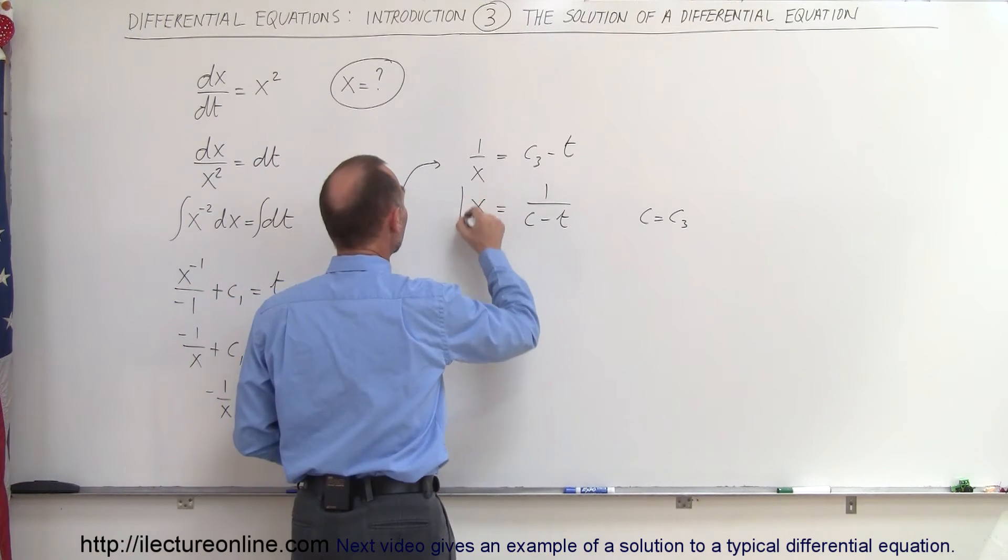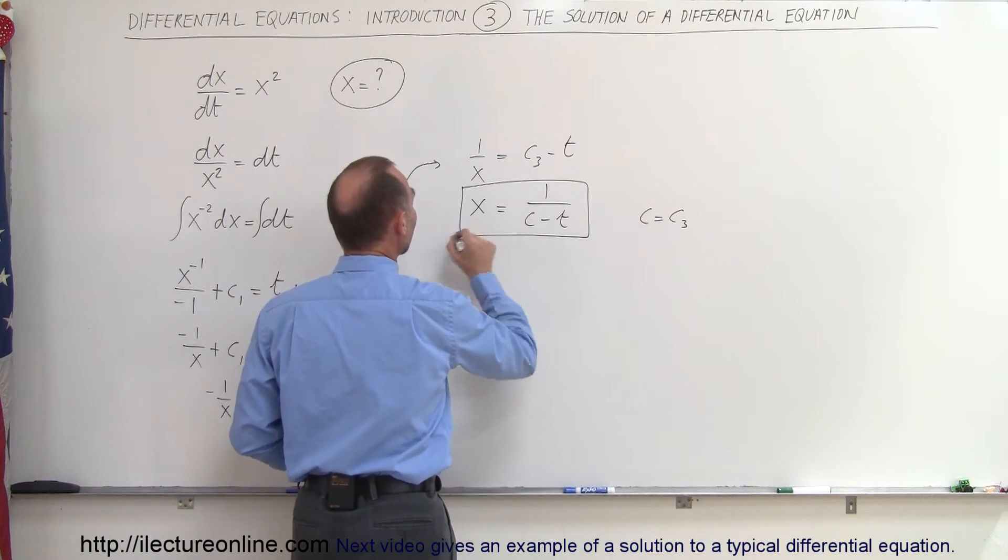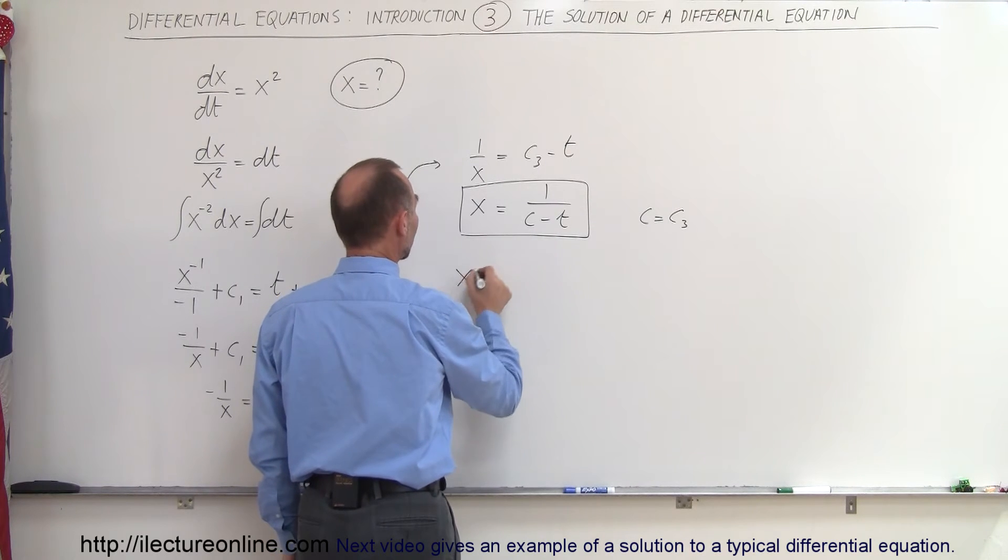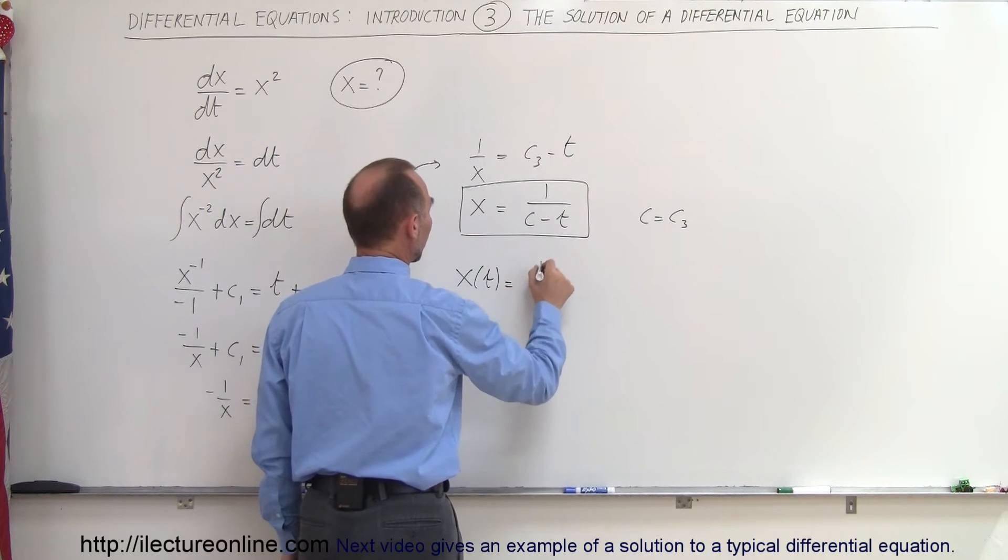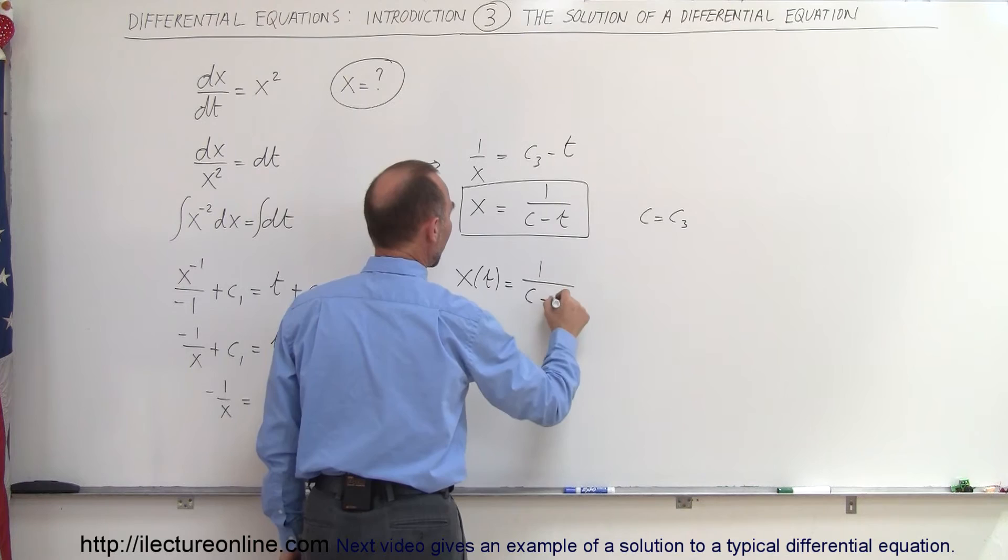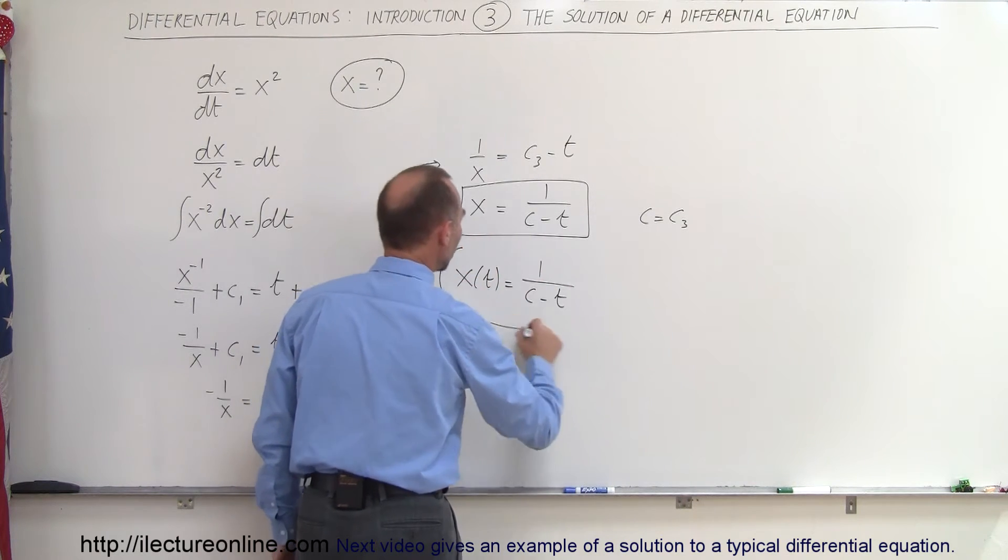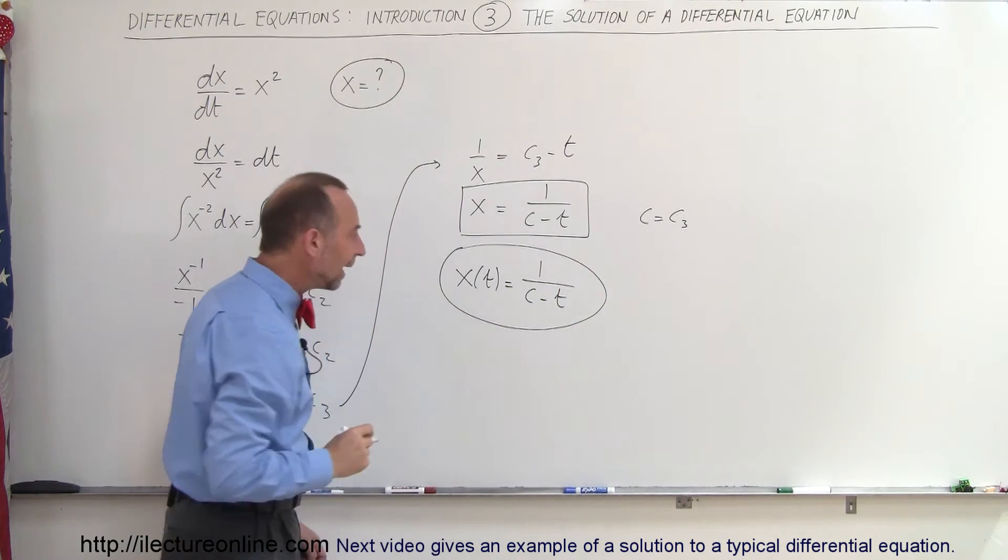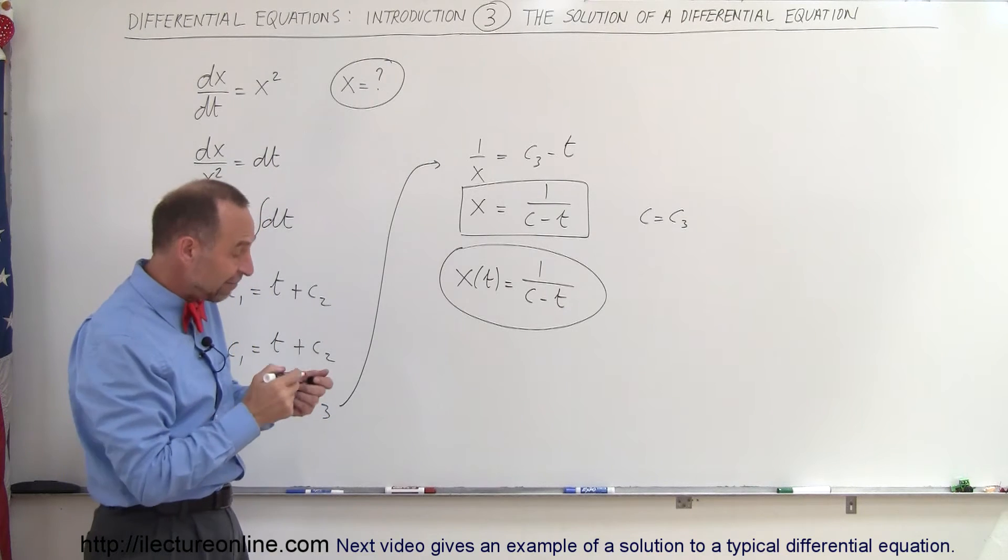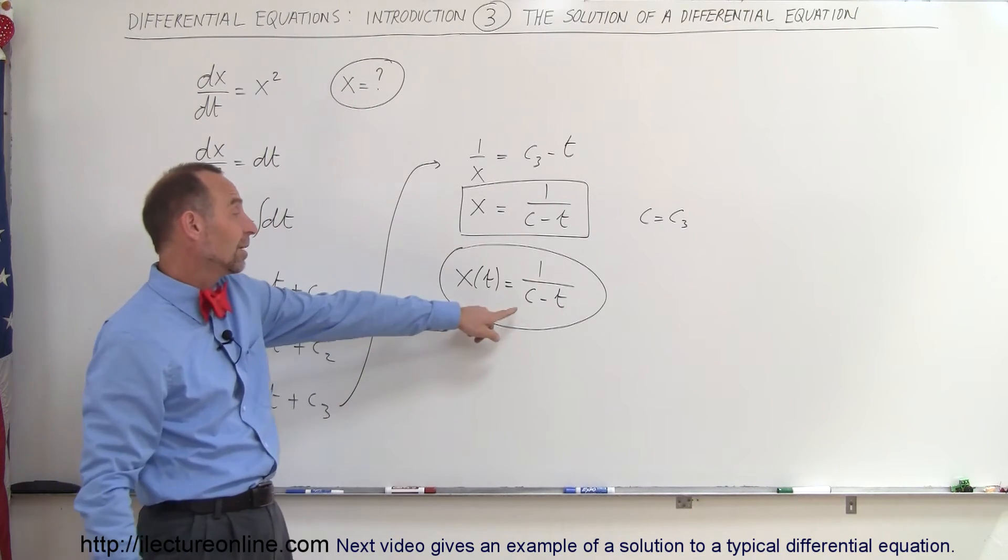I found the function x as a function of t, and that's what it looks like. Basically x, which is a function of t, is equal to 1 divided by some constant minus t. And notice that it can be an infinite number of solutions because c can be any value.